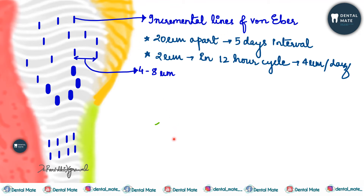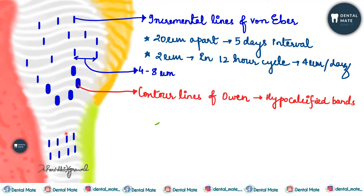Next, the contour lines of Owen — these are basically the accentuated incremental lines of Von Ebner. When incremental lines are accentuated, they are known as the contour lines of Owen. They represent disturbance in matrix and mineralization process. These are hypocalcified bands seen clearly in the ground section, and they are formed due to the coincidence of secondary curvatures present in the dentinal tubules.